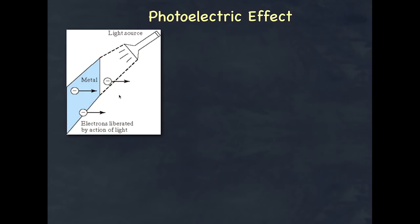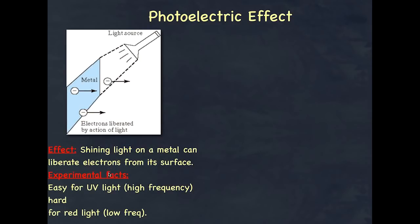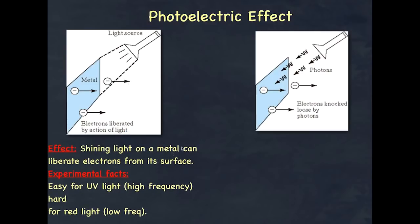We call these photoelectrons — literally electrons released by light. 'Photo' literally means light in Greek. The shining of light on a metal causes electron emission, and it seems that UV light works well but red light does not. So somehow, the frequency is definitely affecting the ability to liberate electrons. Einstein suggested: how about we treat light, as Planck suggested, as actually in a particulate form — that is, it comes in discrete amounts.